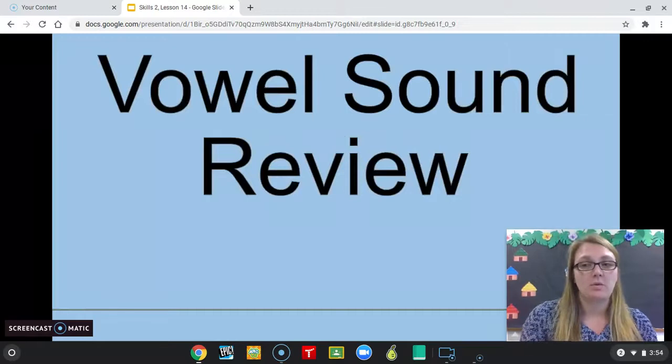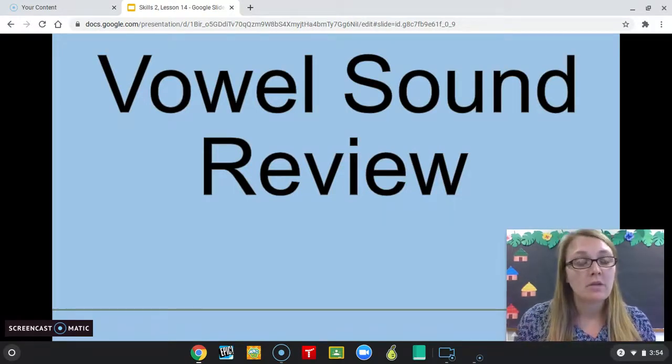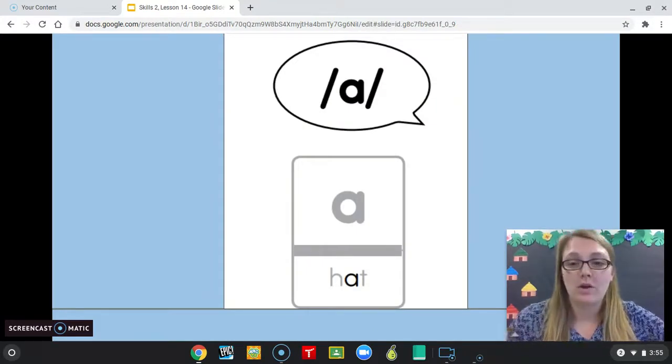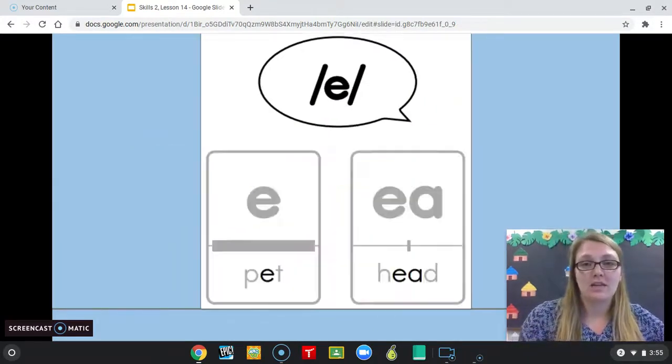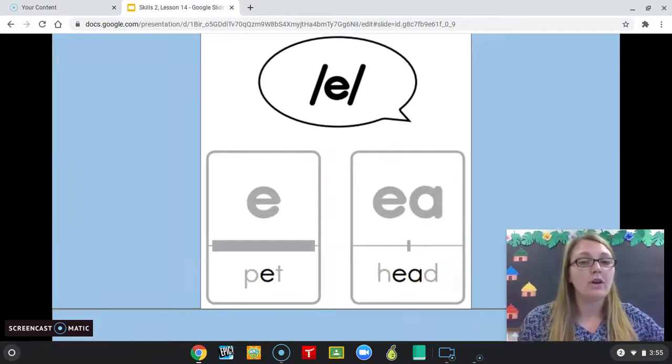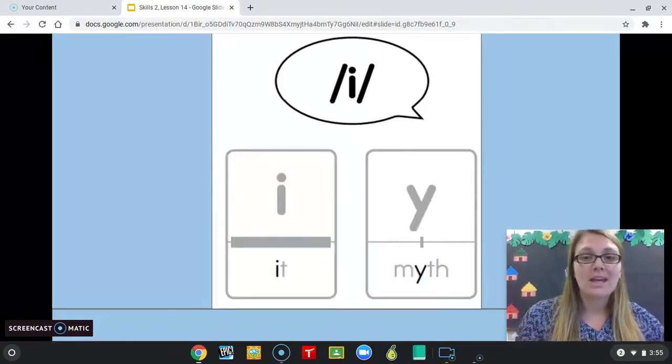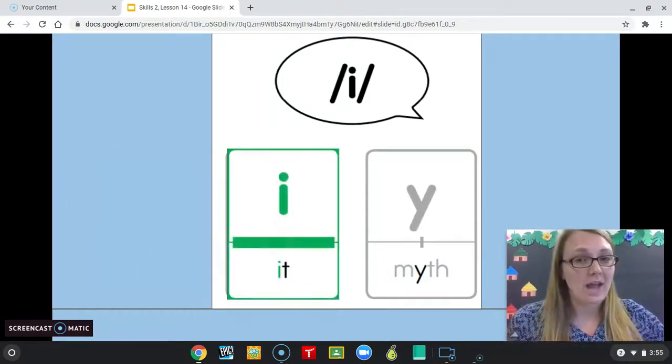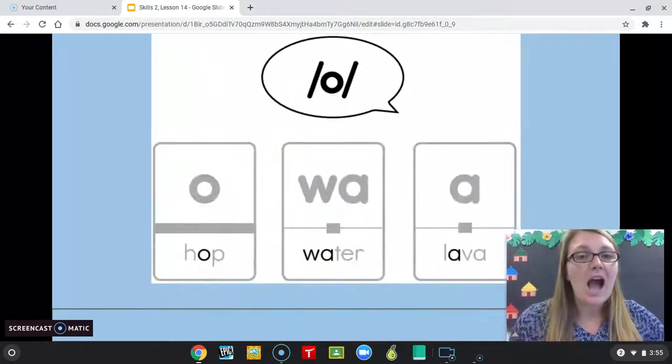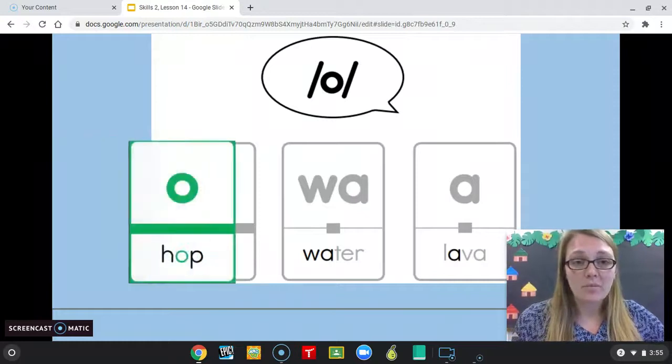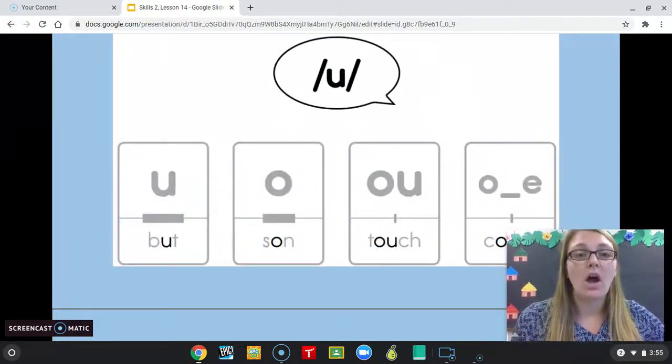Our vowel sound review - we're going to go through all the vowel sounds in preparation for our upcoming assessment. For the ah sound, the only spelling is the letter A. So far we've gone over the letter E, which is the most common spelling. I is usually spelled with an I. O, like in hop, is O. U, like in butt, is U.